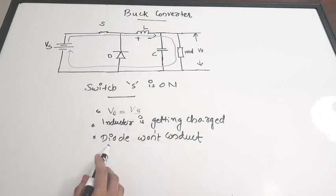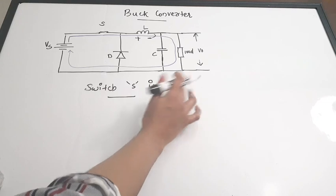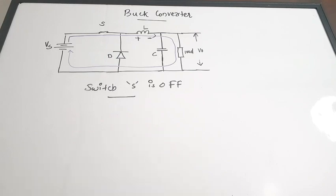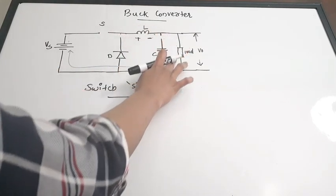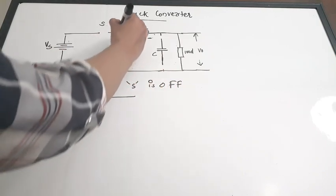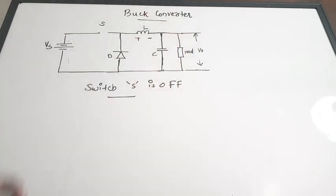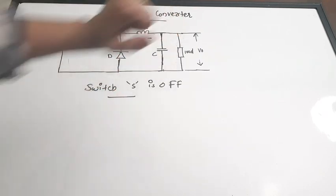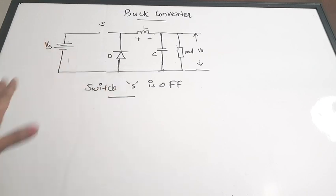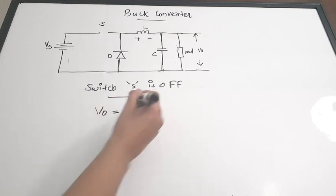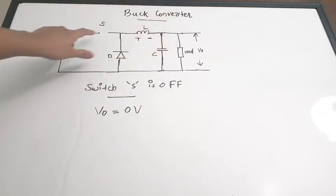Next we look at the case when the switch is OFF. We turn off the thyristor switch, creating an open path. Now there is no connection between the supply and the load. So one thing is very clear: when switch S is off, V_out equals zero volts, because there is no connection between supply and load — an open path has been created.